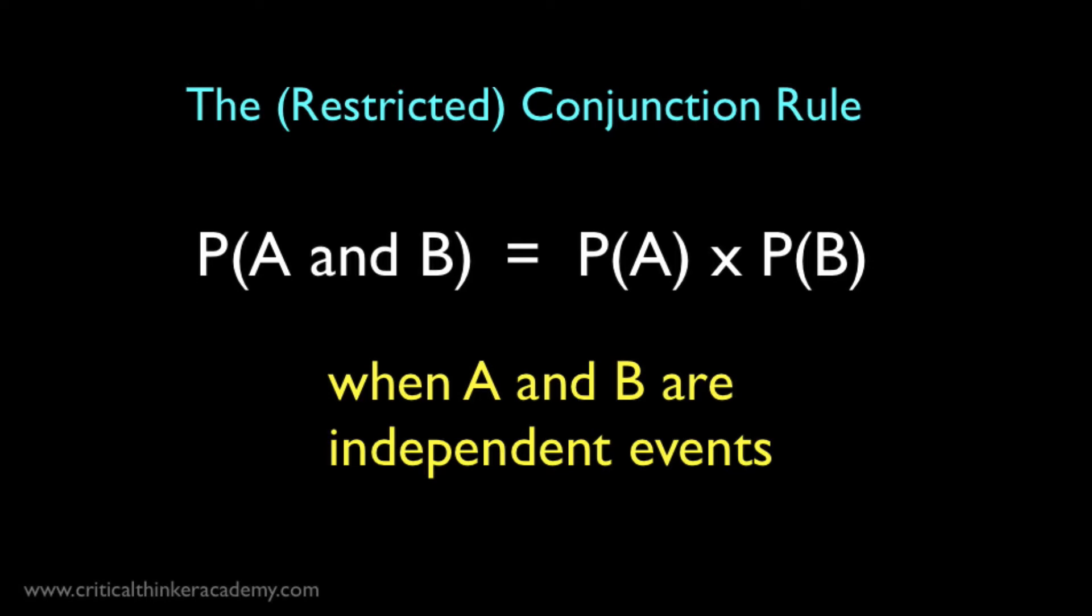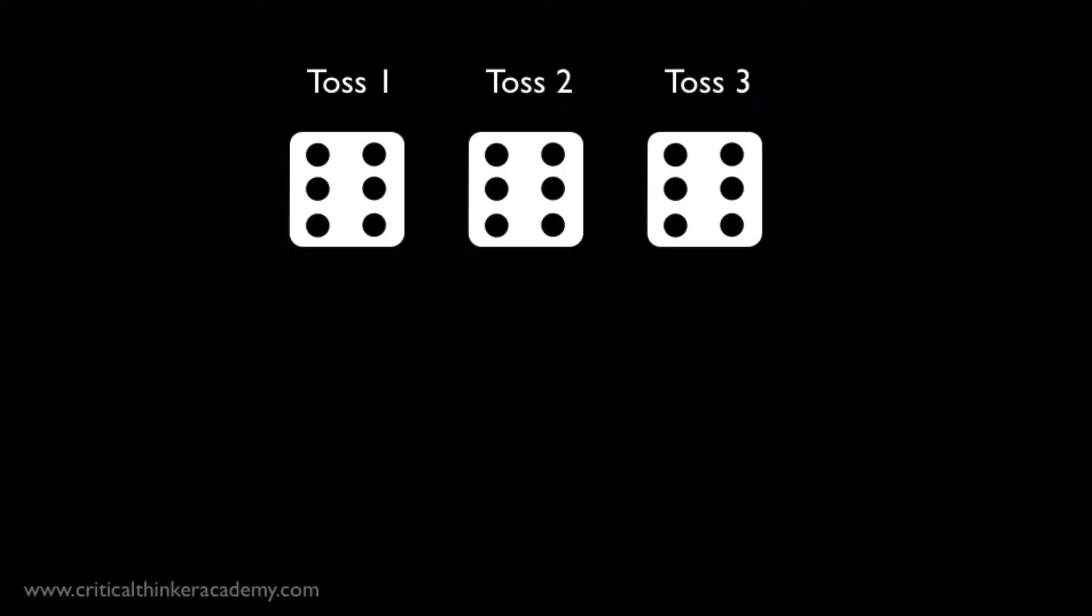Let's just look at one more example. Using a six-sided dice, what is the probability of rolling three sixes in a row? Dice rolls, like coin tosses, are independent events, so we can use the restricted conjunction rule.